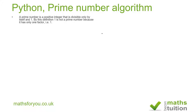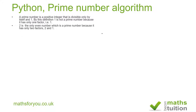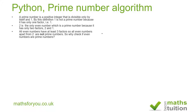First, the definition of a prime number: it is a positive integer divisible only by itself and one. So one is not a prime number because it has only one factor. Two is a prime number because it has two factors: itself and one. All even numbers have at least three factors, so all even numbers apart from two are not prime numbers — so there's no point checking if even numbers are prime.